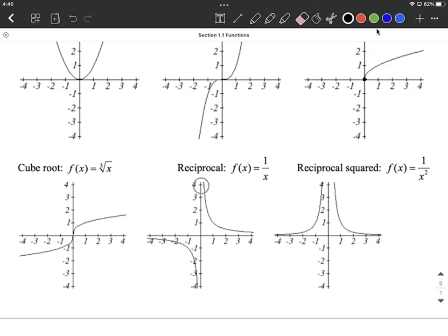You'll also notice on this that we're not allowed to plug in an X value of 0. This is what we refer to as a vertical asymptote at the Y axis, and a horizontal asymptote at the X axis. And again, this kind of goes back to the domain. We're not allowed to divide by 0, so I can't put a 0 in for this X.